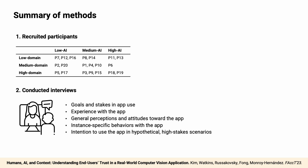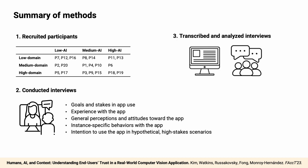Here's a quick summary of our study methods. First, we recruited Merlin users with varying domain and AI knowledge as our study participants. Second, we conducted semi-structured interviews and asked participants about their context of app use and trusting the app from many angles, including goals and stakes in app use, experience with the app, general perceptions and attitudes towards the app, instance-specific behaviors with the app, and intention to use the app in hypothetical high-stakes scenarios. Afterwards, we transcribed the interviews and analyzed the transcripts using abductive coding, meaning our data analysis was an iterative process where we moved between empirical data and available theory.